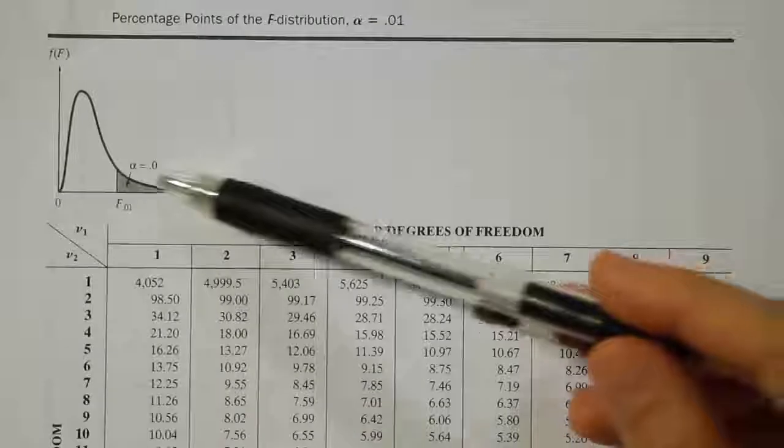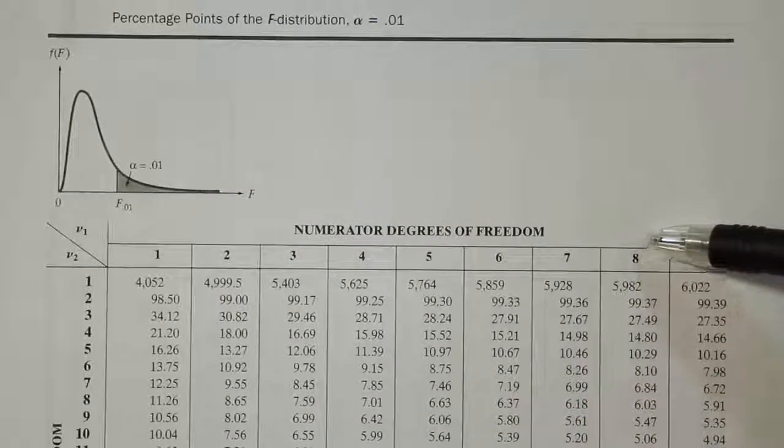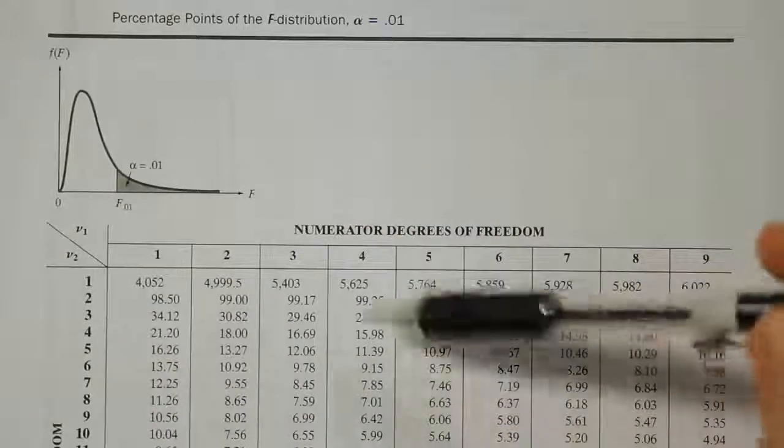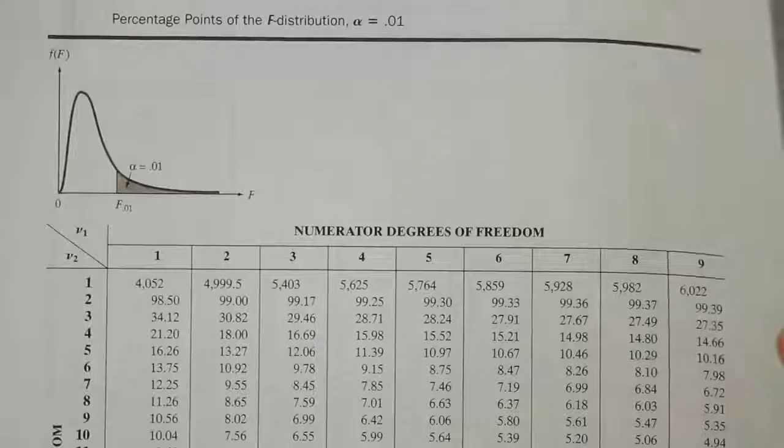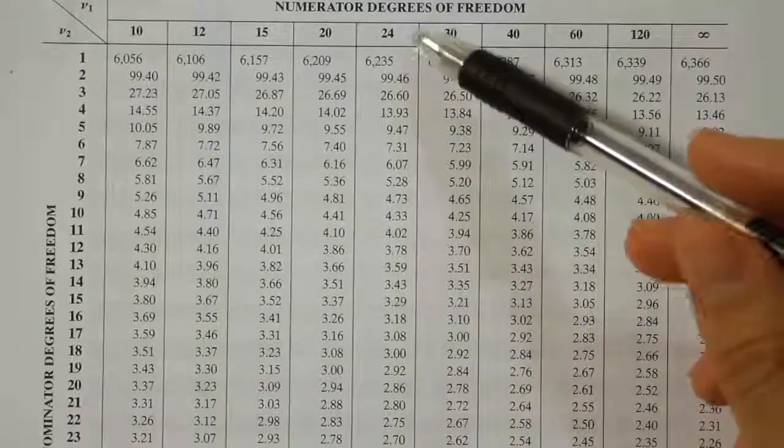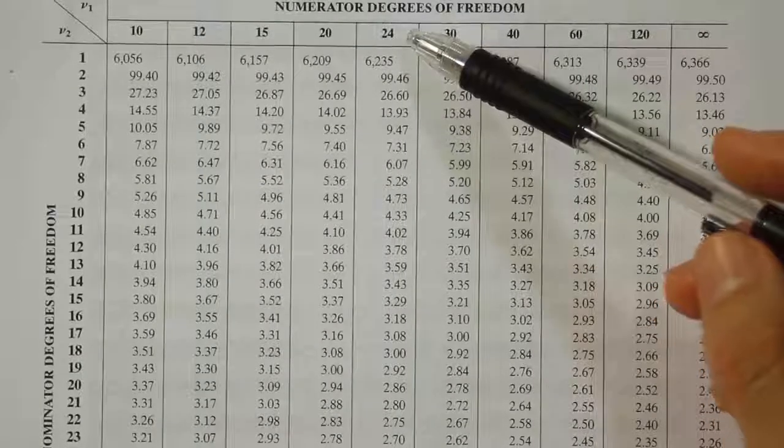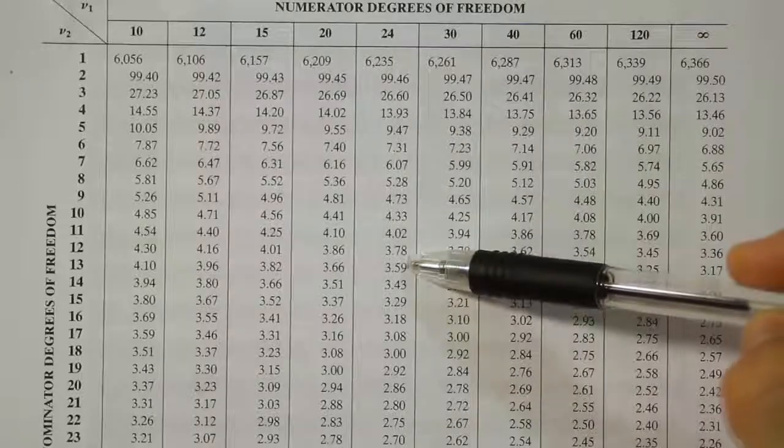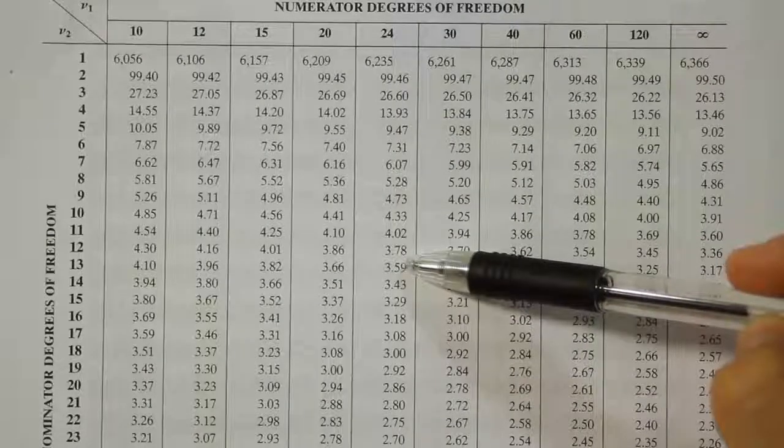Okay, so we're on the .01 F distribution table and we're trying to find numerator degrees of freedom 24 and denominator degrees of freedom 13. Now you can see this first page doesn't have 24 for the numerator, so we're going to go to the next page of the table. The next page of the table has 24 degrees of freedom for the numerator. And for the denominator, we need to go down to where it says 13. So we'll find down here the value 3.59.